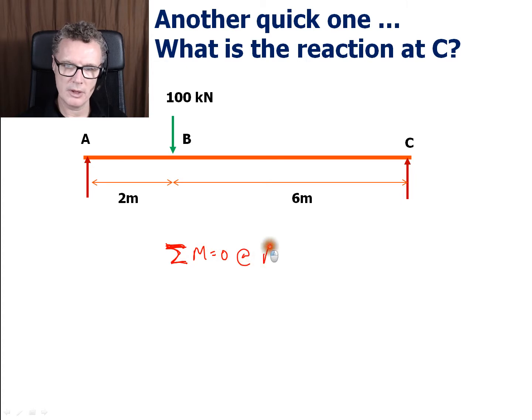To get rid of that unknown, go clockwise. I've got 100 times 2. This reaction point here is 8 meters away in total from A. It's going in the opposite sense, so 8 times Rcy.